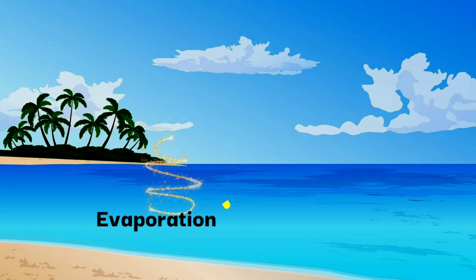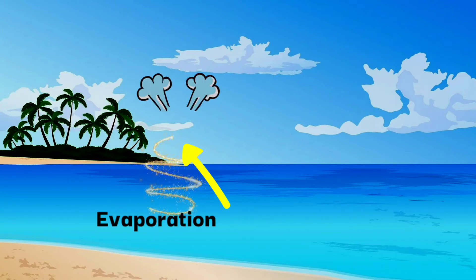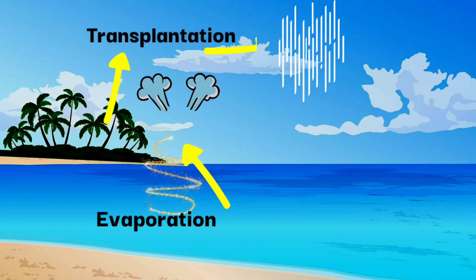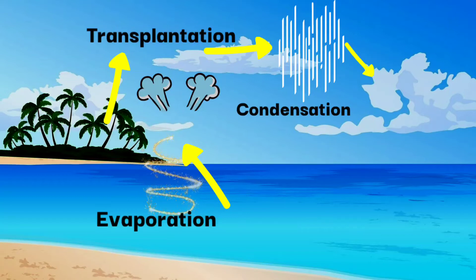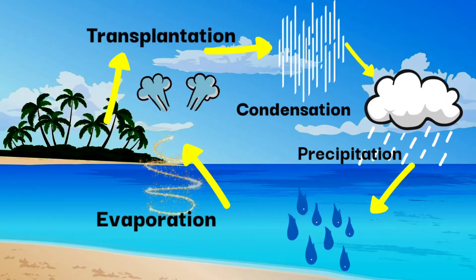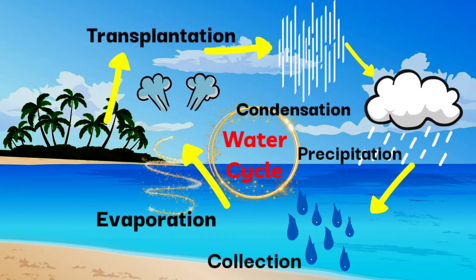Water goes up as water vapor due to the heat of the sunlight. The process of changing water into water vapor is called evaporation. Generally, the water in the ponds, tanks, rivers and sea gets evaporated into the air. It condenses and forms the clouds.